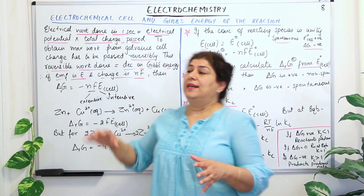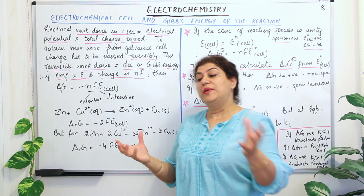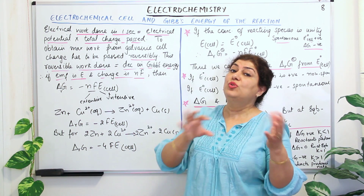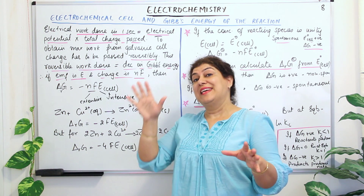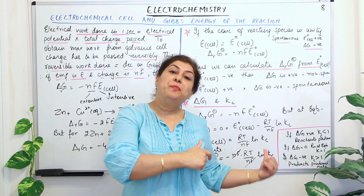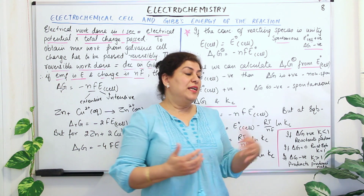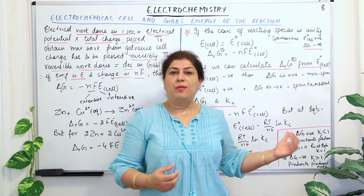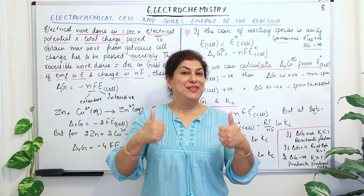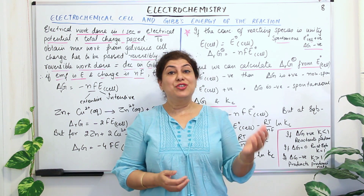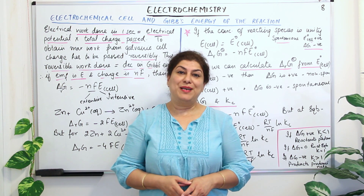This is how we relate the electrochemical cell to Gibbs free energy, the EMF of the cell to the equilibrium constant, and both delta G and the equilibrium constant based on electrochemical reactions. In the next video I will solve numerical problems based on this. If you found this video helpful, give it a thumbs up, subscribe to my channel, recommend it to your friends, and keep returning for more videos on chemistry. Thank you for watching.